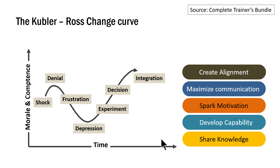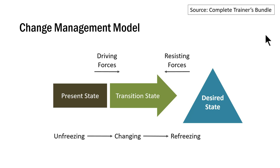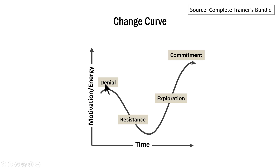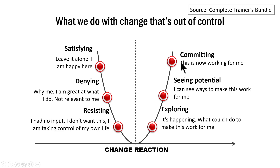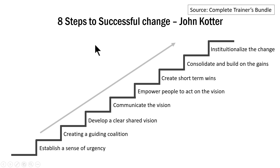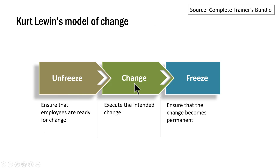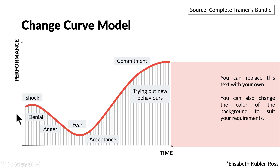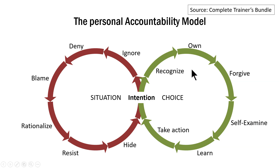I'm going to show you some more options for change models — all these models are already created as PowerPoint templates in our complete trainers bundle. Here is another popular change management model showing the various stages of change, and this is a simpler version of the Kubler-Ross change curve. Here we have another variation — John Kotter's 8 steps to successful change. Then there is Kurt Lewin's model of change: unfreeze, change, and freeze. And here is a change curve model in a different way using flat design style, and a personal accountability model showing loops of situation and choice.